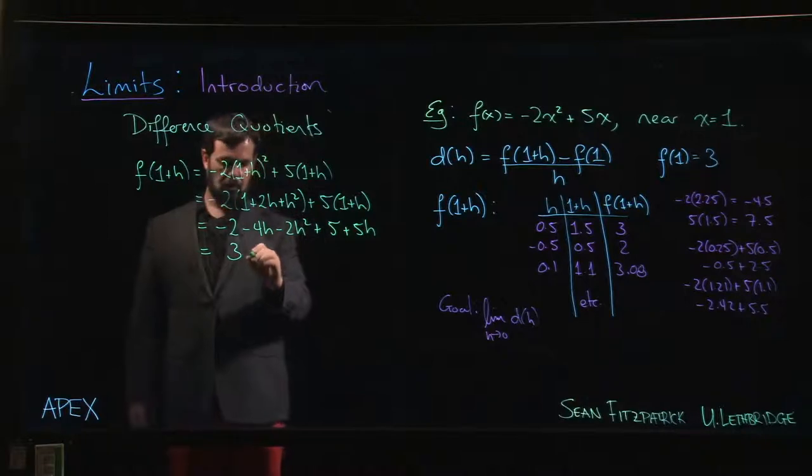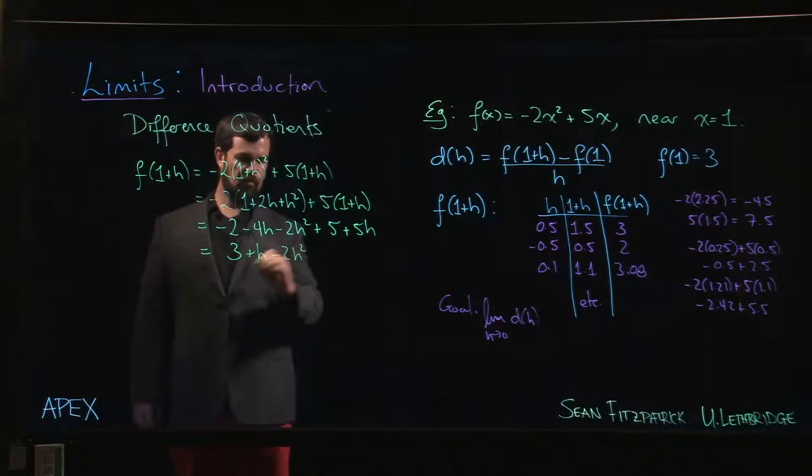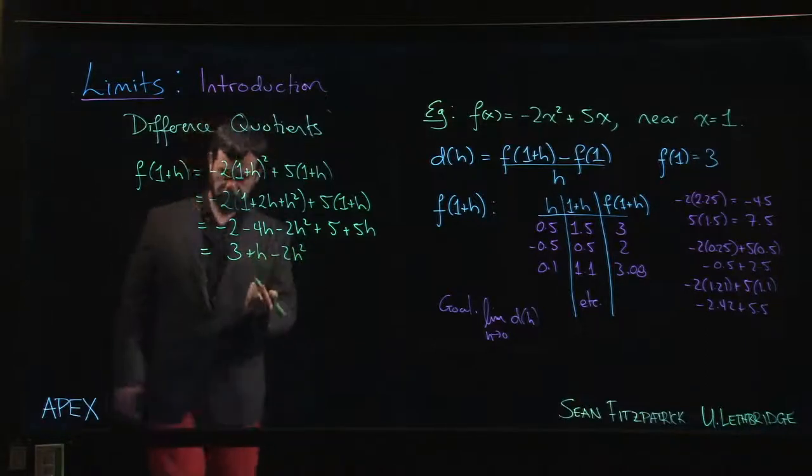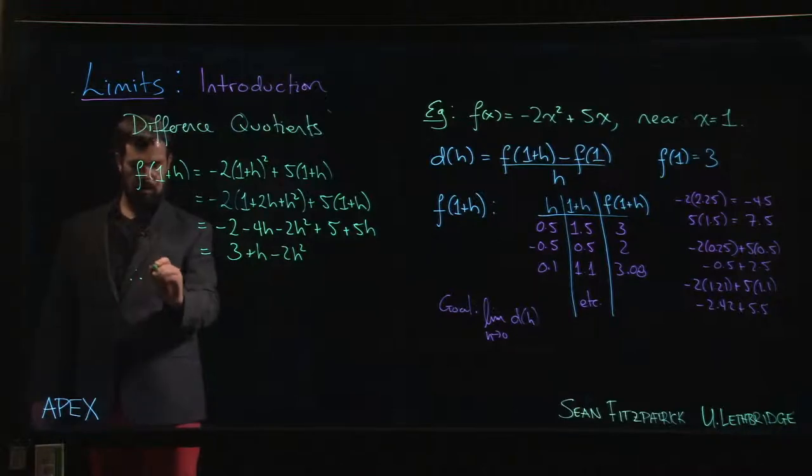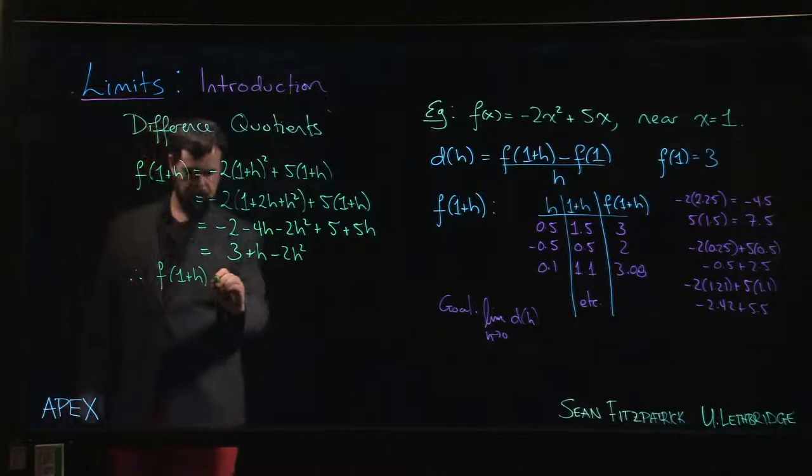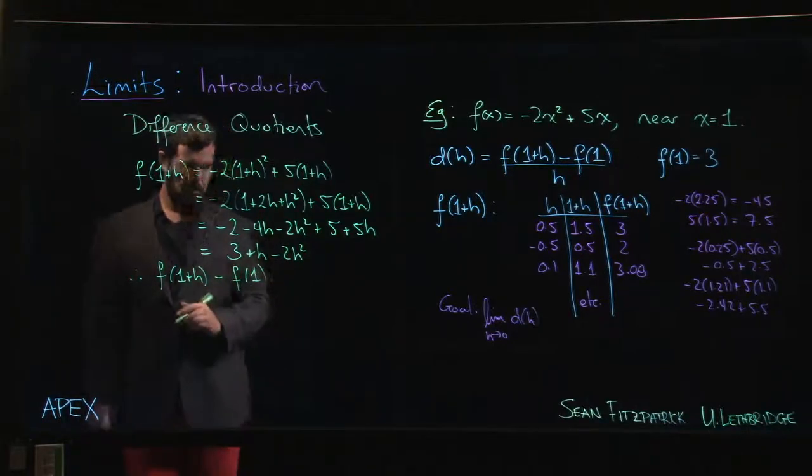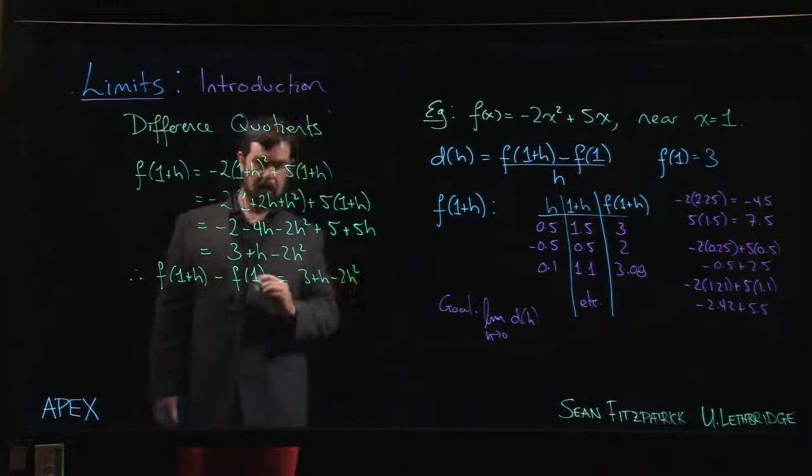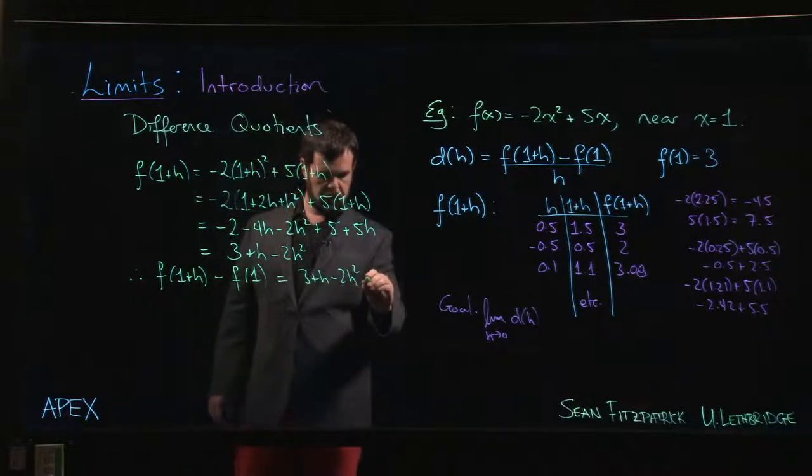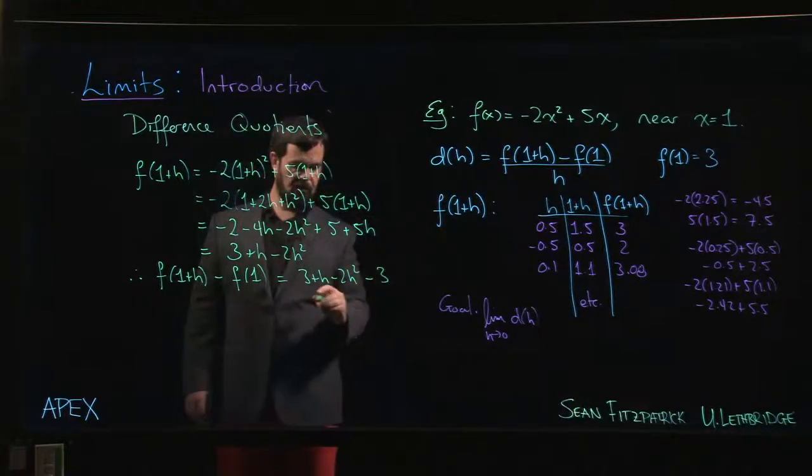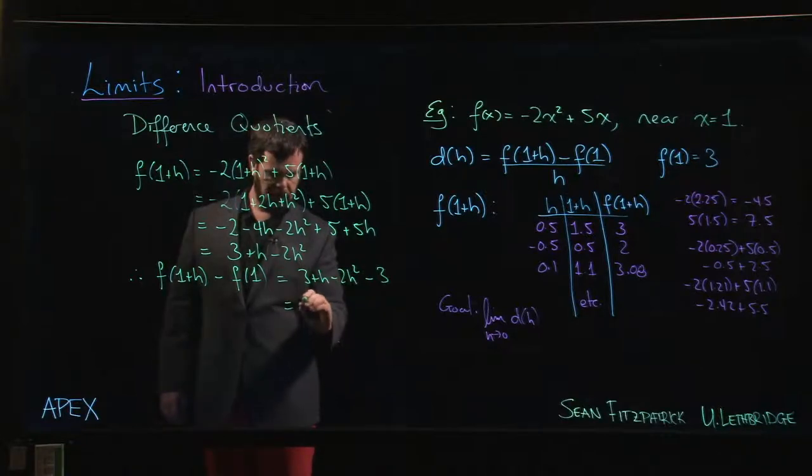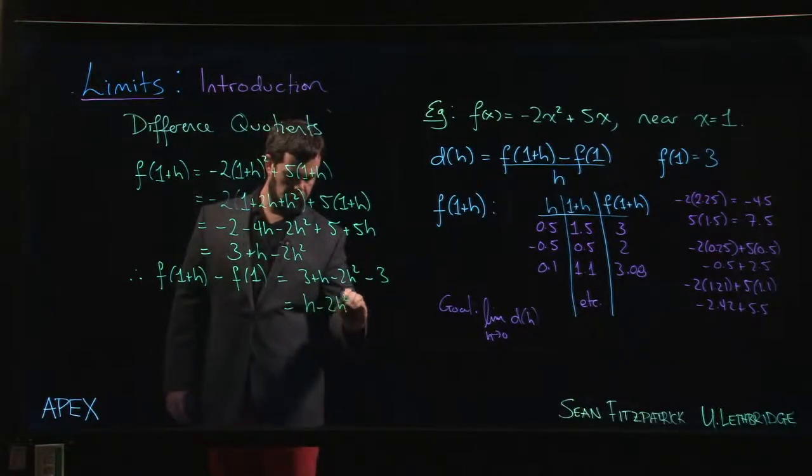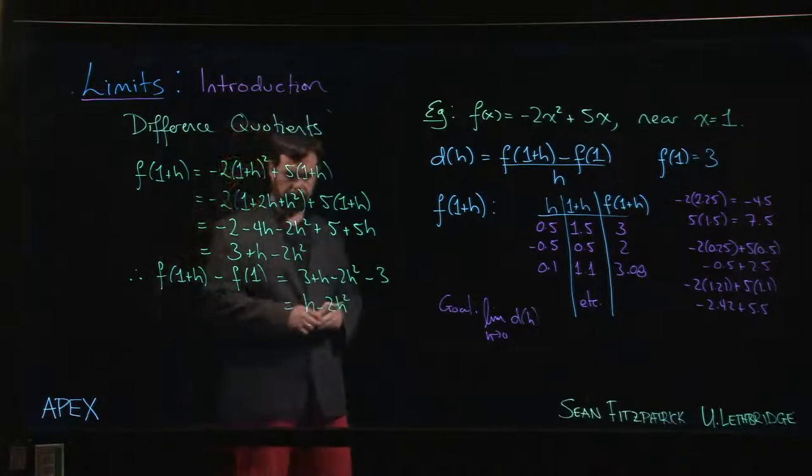Then 5H minus 4H, so plus H, and then we have this minus 2H squared. So that means that if I wanted to do f of 1 plus H minus f of 1, that's going to be 3 plus H minus 2H squared minus f of 1, which is 3. And the 3s cancel, and you're left with H minus 2H squared.